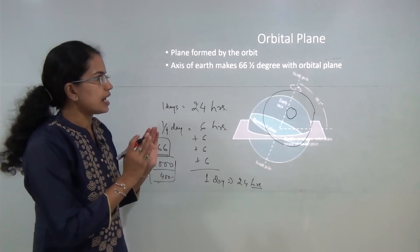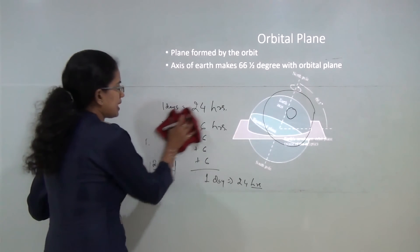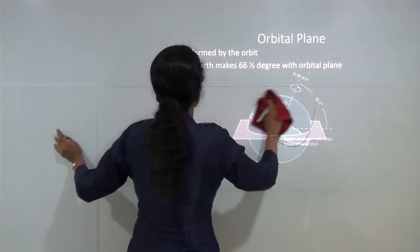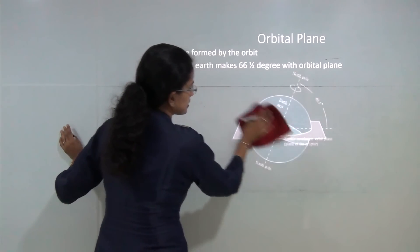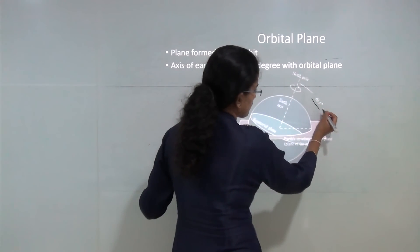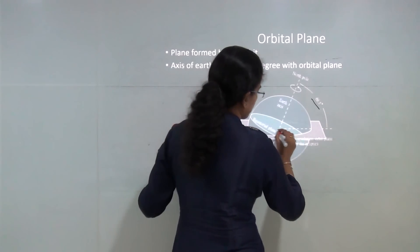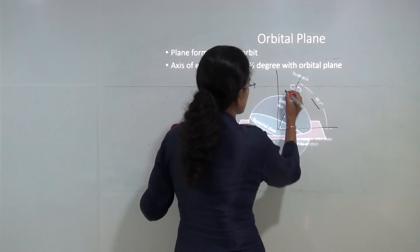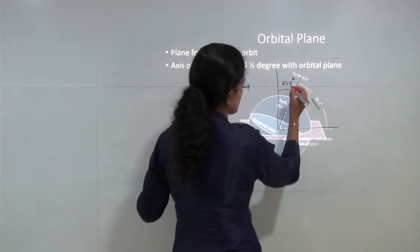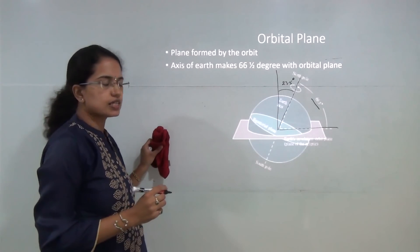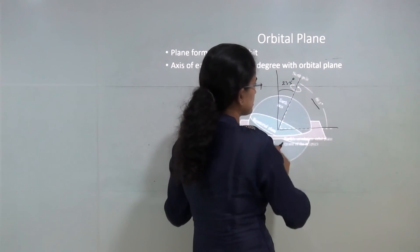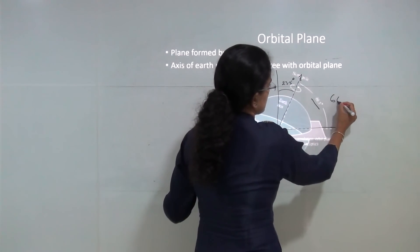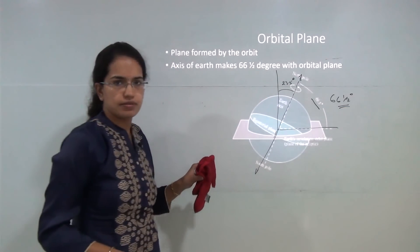Now let's understand what an orbital plane is. The plane formed by the orbit of the earth is known as the orbital plane. The axis of the earth makes an angle of 66.5 degrees from the orbital plane. So you have the orbital plane and the axis of the earth, which is tilted at 23.5 degrees, making 66.5 degrees with the orbital plane.